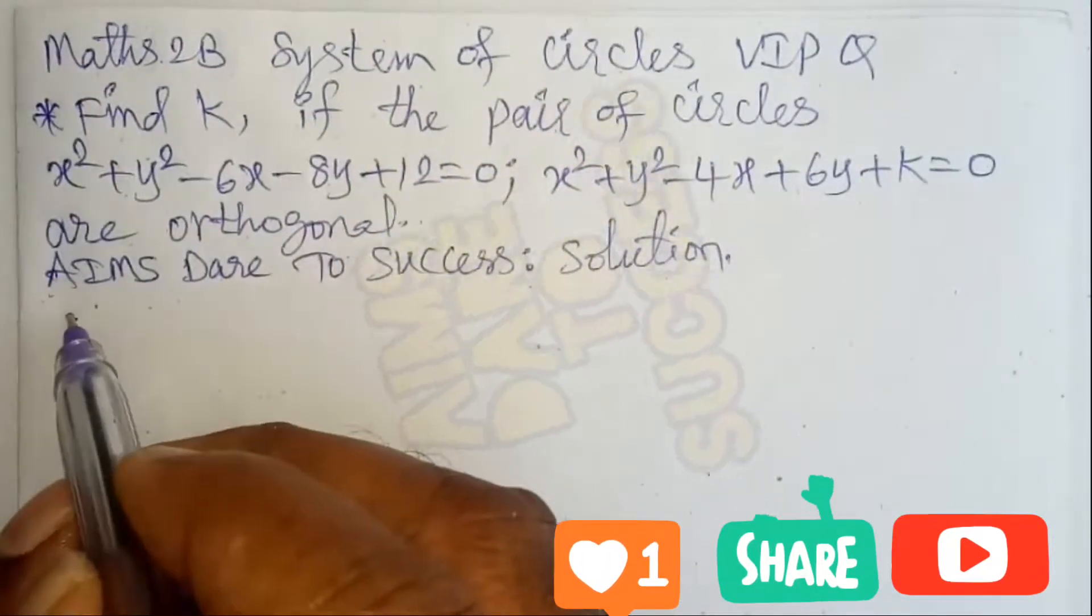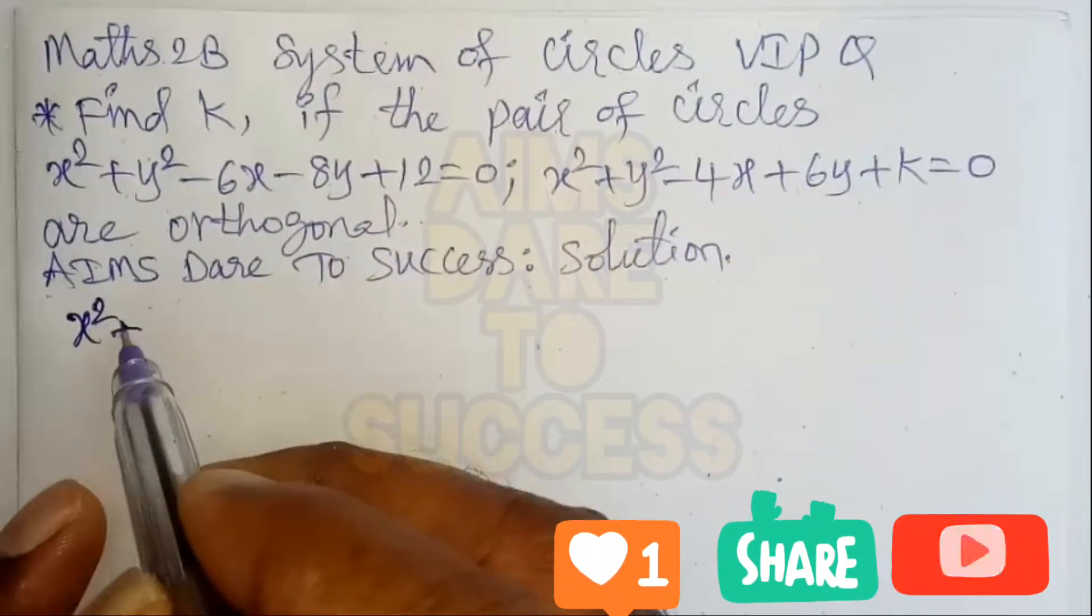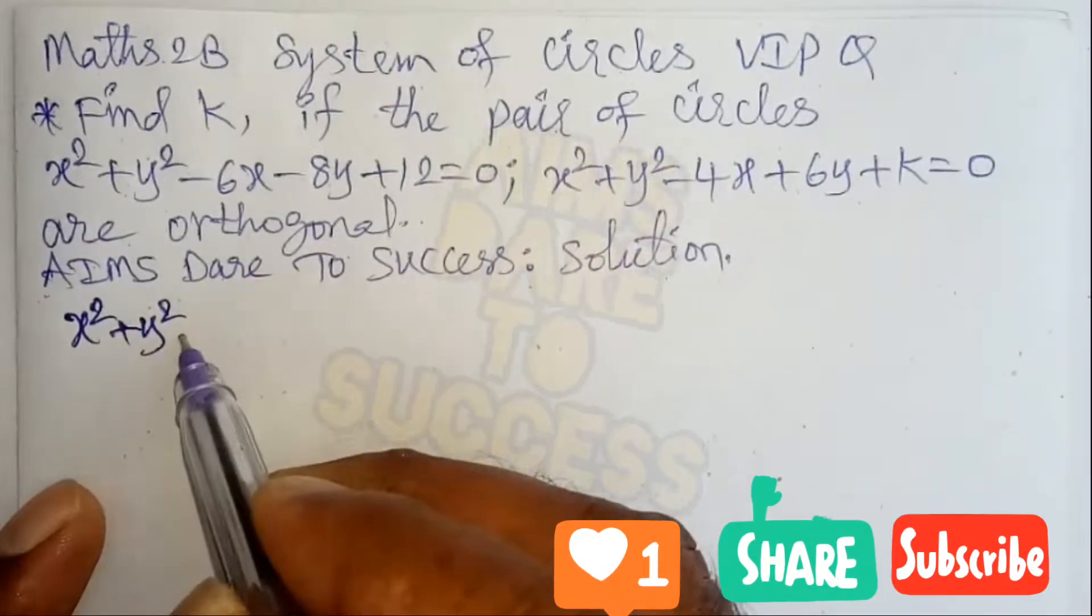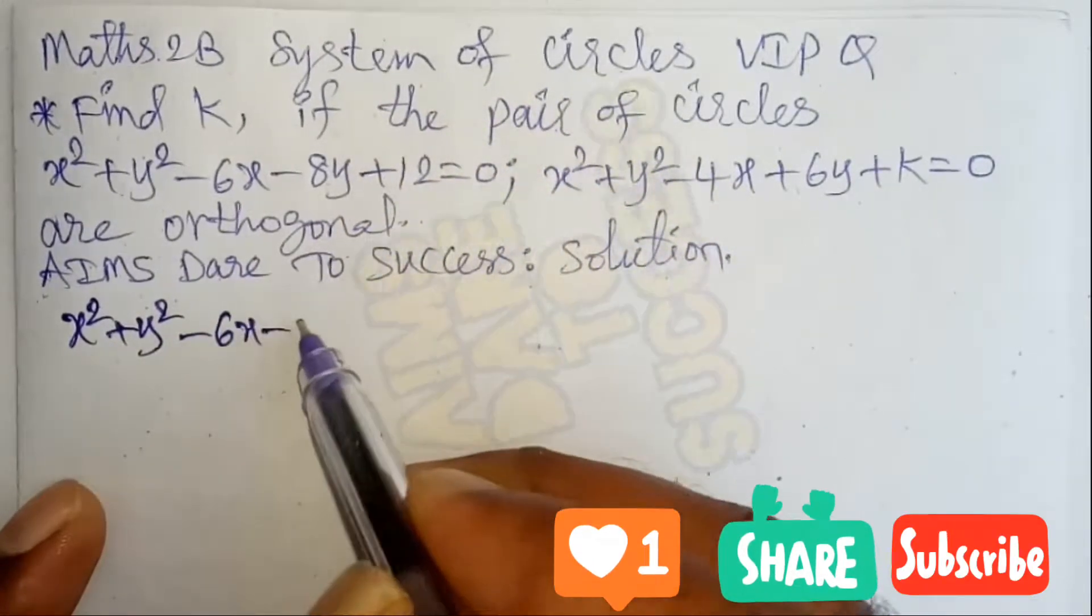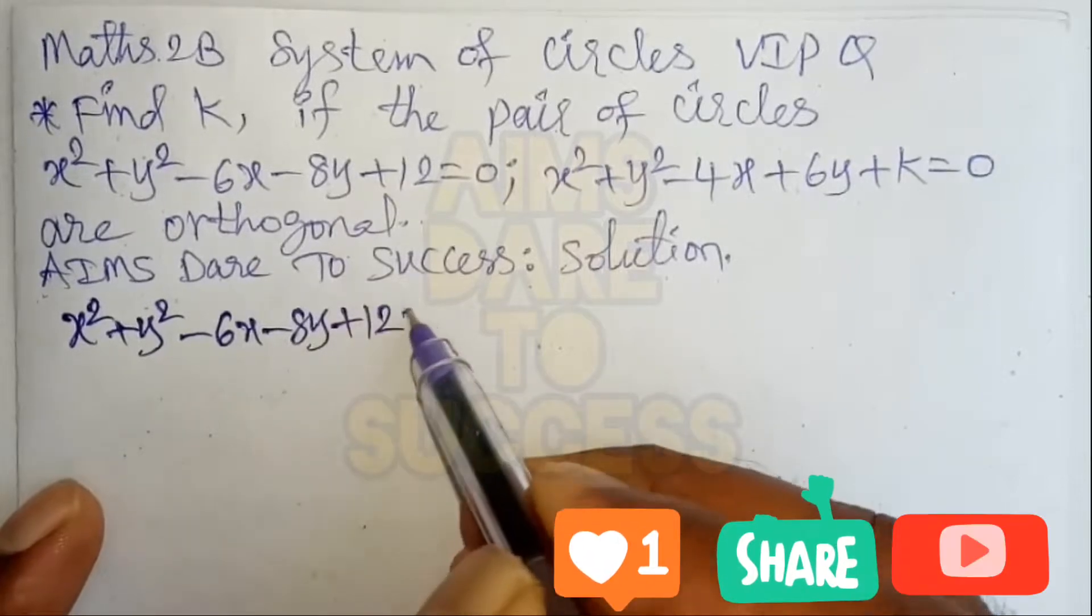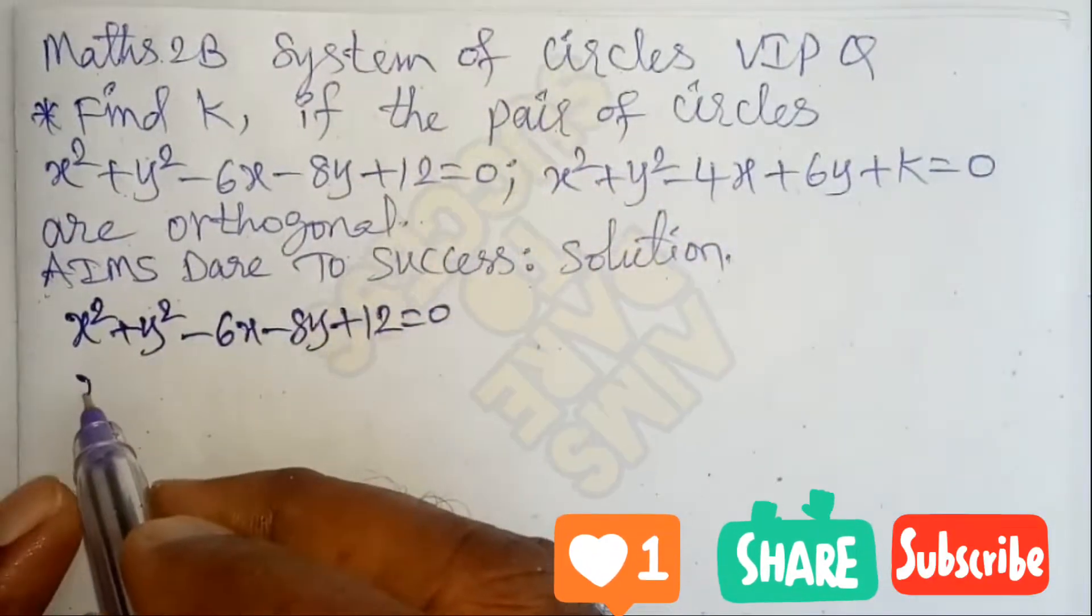Math 2B system of circles, very important previous question. Find k if the pair of circles are orthogonal. Our first circle is x² + y² - 6x - 8y + 12 = 0. This is in the form...